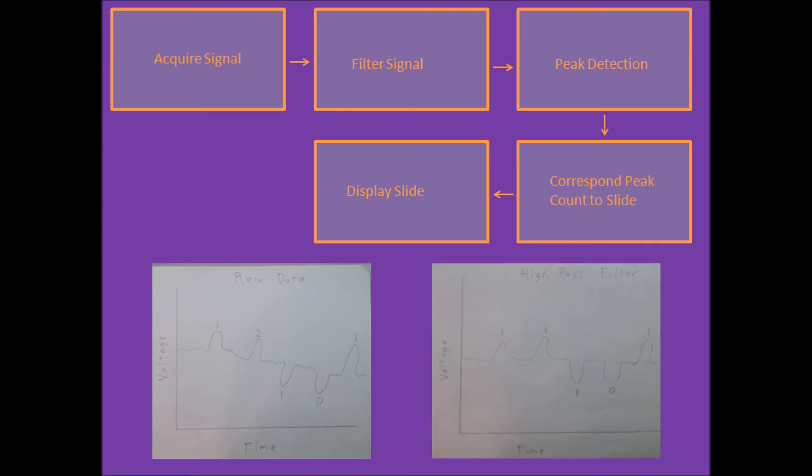Next, we need to detect the peaks of the signal. When the user looks to the right, there will be a positive peak relative to the baseline. When the user looks to the left, you will see a negative peak relative to the baseline. LabVIEW has peak detector VIs that will detect these peaks and send the peak information to a MATLAB block.